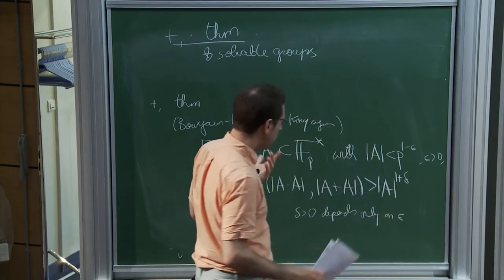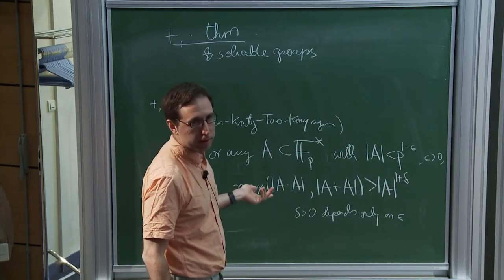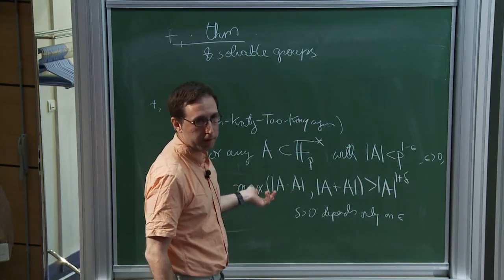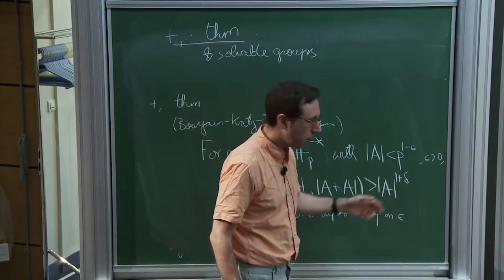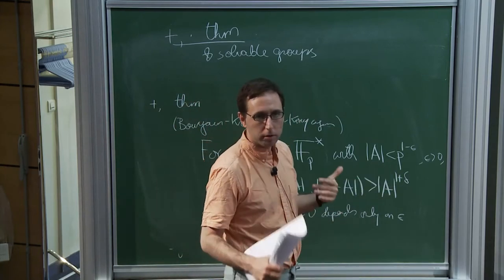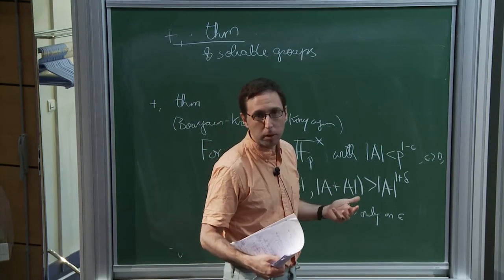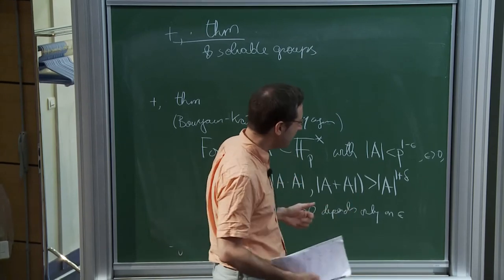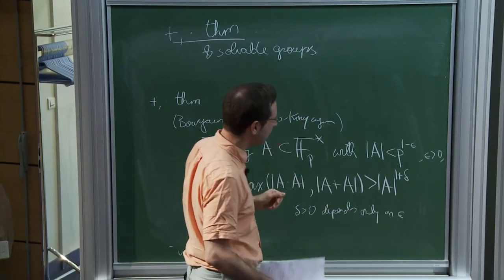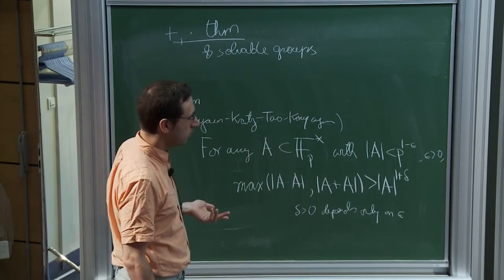What do I mean by much larger? I mean larger by an exponent 1 plus delta, where delta depends only on epsilon. For a finite field, having such strong growth is actually quite a strong statement — we are familiar with this fact, but it is very strong.